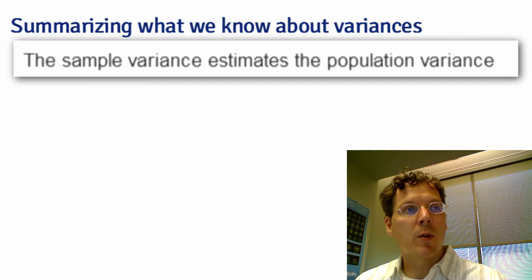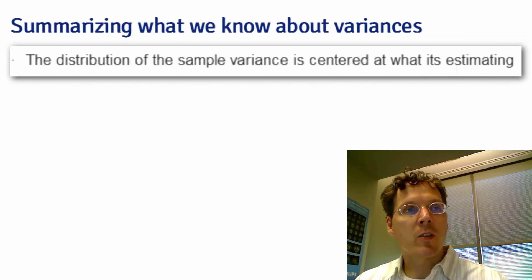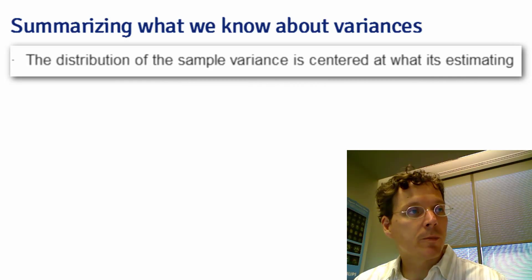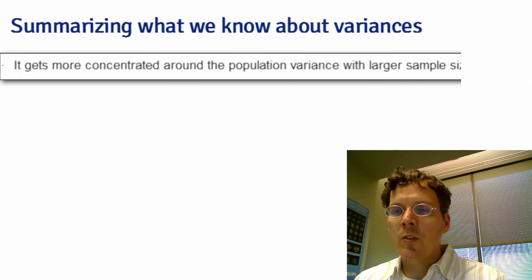The sample variance is an estimate of the population variance. The distribution of the sample variance is centered at what it's estimating. This is a good thing. This means that it is unbiased. And it gets more concentrated about what it's estimating as you collect more data.